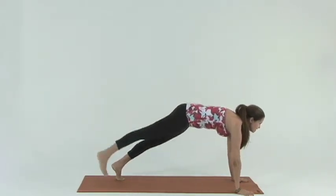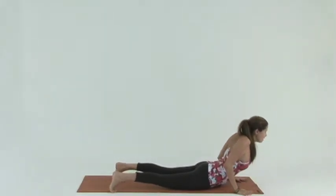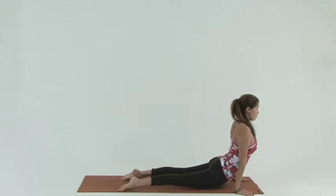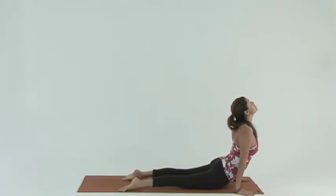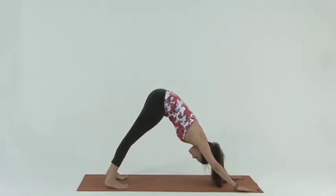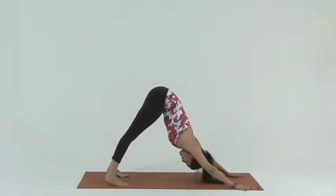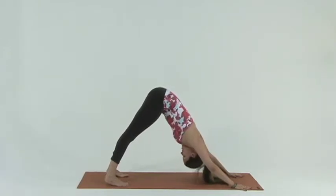Step back. Lower down. Chaturanga. All the way down. Inhale. Up dog. Open the heart. Look up. Exhale. Downward facing dog. Press your heels down. Even out your down dog. Tailbone lifting up high towards the sky. Relax the head and neck.